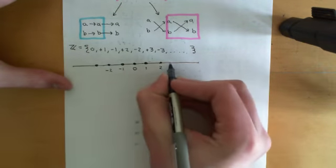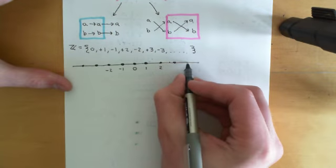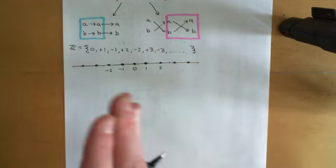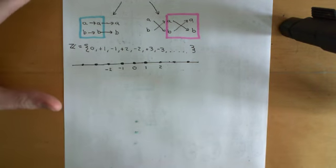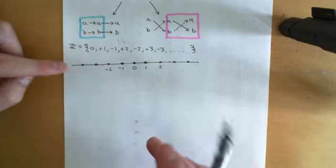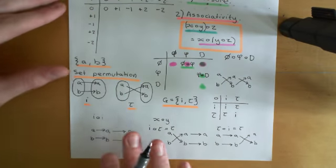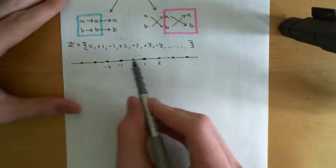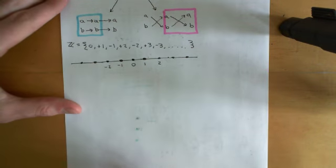Imagine this discrete lattice going on and on — it's a discrete lattice of points in one dimension, equally spaced apart. This is the set that I'm going to take set permutations of. It's analogous to the set containing A and B from before. So what are the set permutations of this set represented by each of the symbols in my group of integers under addition?